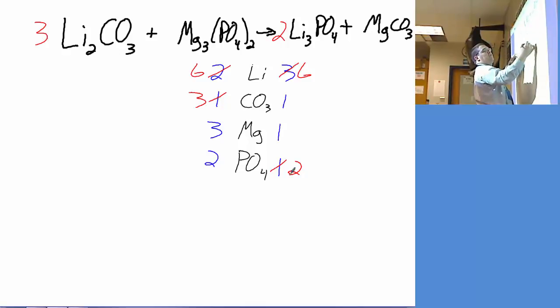All that's left is the magnesium and the carbonate, and it really doesn't matter which one you choose. If you choose magnesium, three on the left, one on the right, so we need a three in front of MgCO3, which changes the magnesium to three but also changes our carbonate count to three, and now everything's balanced.